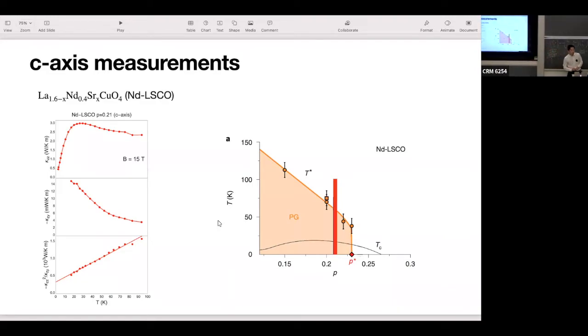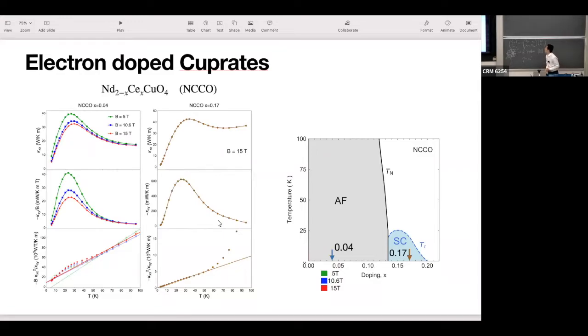Even in the hole-doped cases, close to the critical doping. This further confirms that because we're sending heat in the z-direction, this linear relation is due to the phonons.